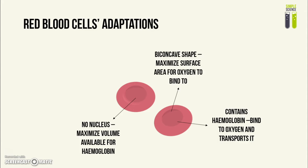Red blood cells also have a biconcave shape, which increases the surface area available for oxygen to bind to. This again serves the purpose of increasing the amount of oxygen that can be transported.